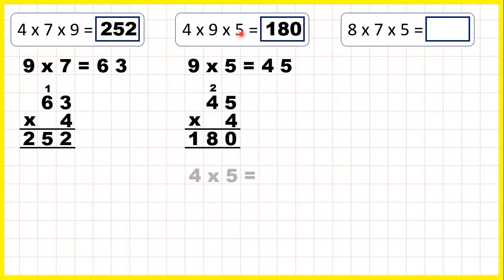So 4 times 5 is 20, and because that ends in a 0, it's really easy to multiply that 20 by the other number in our question. So 20 times 9 is 180.